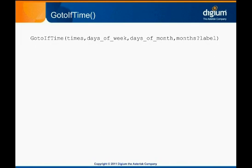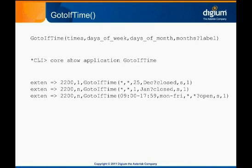GoToIfTime is a more specific version of GoToIf with modified syntax for condition evaluation. GoToIf uses the standard Asterisk expression parser for evaluation, but GoToIfTime has its own syntax that is optimized for specifying time. The format can be seen by running 'core show application GotoIfTime' on the Asterisk CLI. One common use of GoToIfTime is to control whether a given IVR or call queue is available to outside callers. It's typical to put several GoToIfTime calls in a row with the most restrictive times first — true evaluation jumps to a special holiday or out-of-office message, while false evaluation continues executing at the next priority. An example dial plan is provided as an attachment for your review.